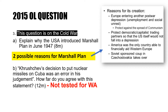Moving on, this is the 2015 O-level question. Again, you have the 'a' question on Cold War and the 'b' question on the Cuban Missile Crisis, which we have not covered. Let's focus on 3a: 'Explain why the USA introduced the Marshall Plan.' If you remember, the Marshall Plan is part of the broader Truman Doctrine and containment policy, and there are two possible reasons since it is an eight-mark question.